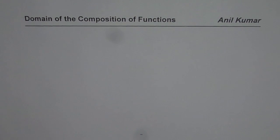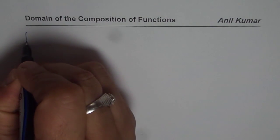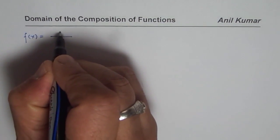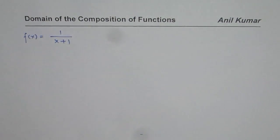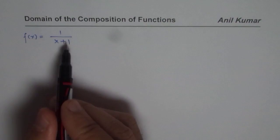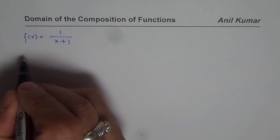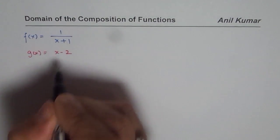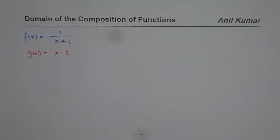I am Anil Kumar and in this video we will take a few examples and understand the domain of composition of functions. To begin with, let us take a rational function since there are a lot of restrictions in rational functions. A simple rational function like f of x equals 1 over x plus 1, and let us also take a linear function g of x equals x minus 2. We will work with these two functions and figure out the domain of the composition of functions.